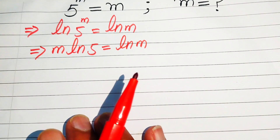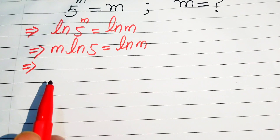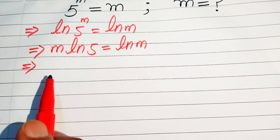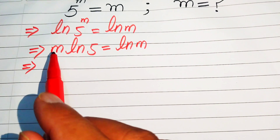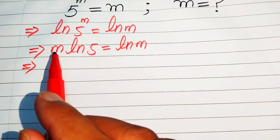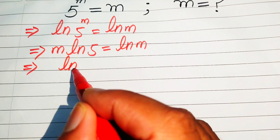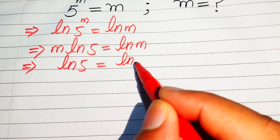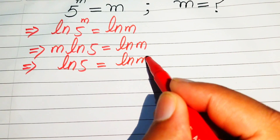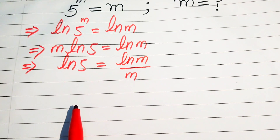In the next step, we move the variable terms to the right-hand side and the constant terms to the left-hand side. The variable term is m, so we move m to the right-hand side and it becomes log 5 equals log of m divided by m.